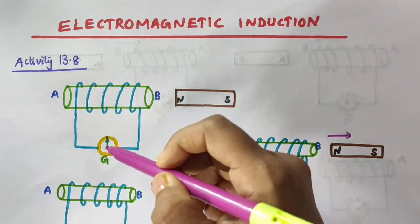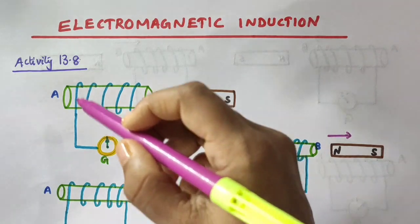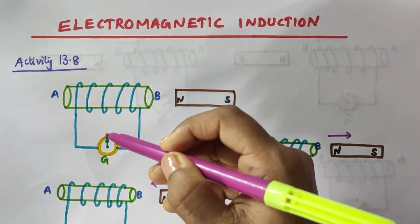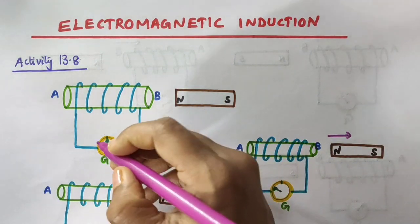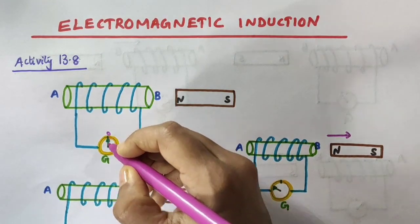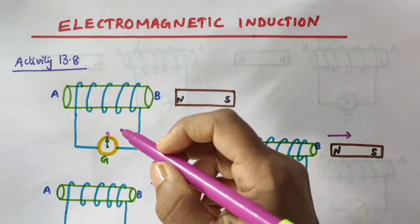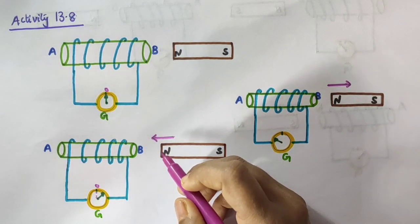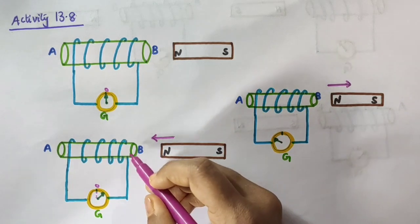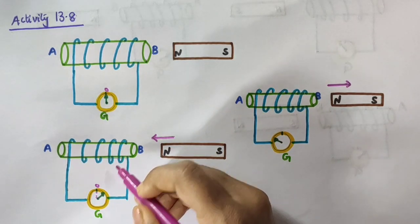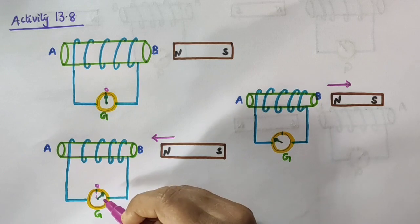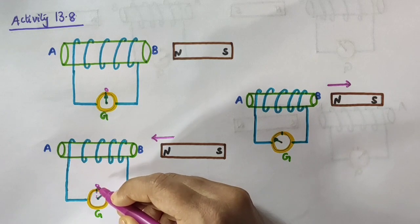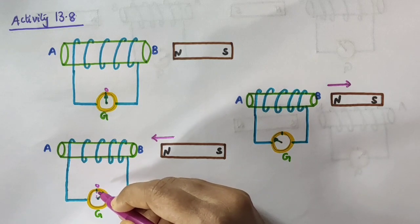When both the coil of wire and the magnet are at rest and stationary, the galvanometer shows zero deflection — the galvanometer needle is pointed towards zero. Now when we move the north pole of the magnet towards the end B of the coil, the galvanometer needle shows a momentary deflection to the right, from the center of the scale.